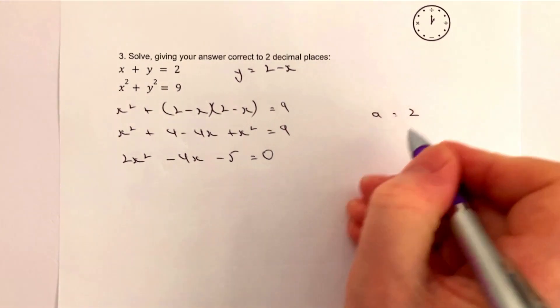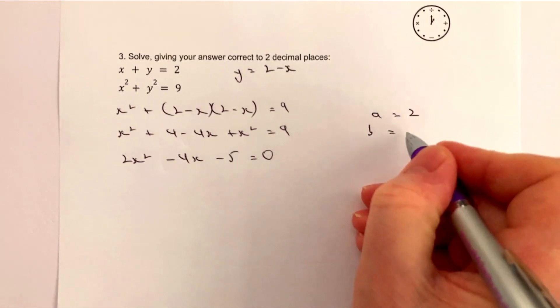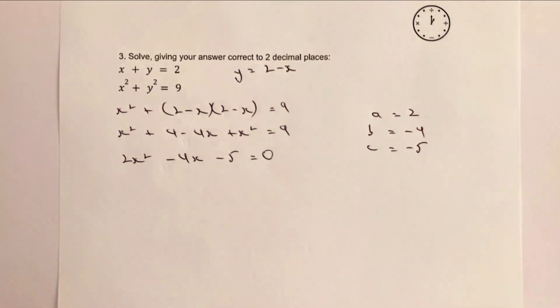So unfortunately with this we're going to need to use the quadratic formula. I'm going to say that a equals 2, b equals minus 4, and c equals minus 5.